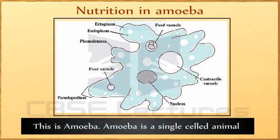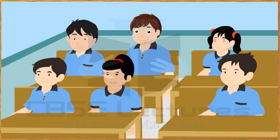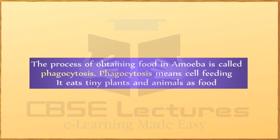Amoeba is a single-cell animal that floats in water. The process of obtaining food in amoeba is called phagocytosis, which means self-feeding. It eats tiny plants and animals as food.